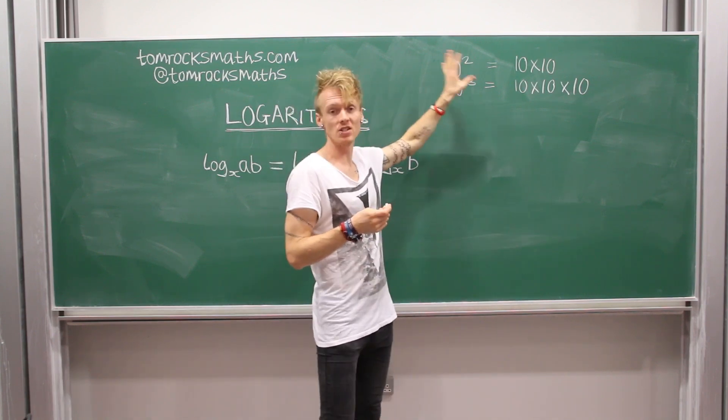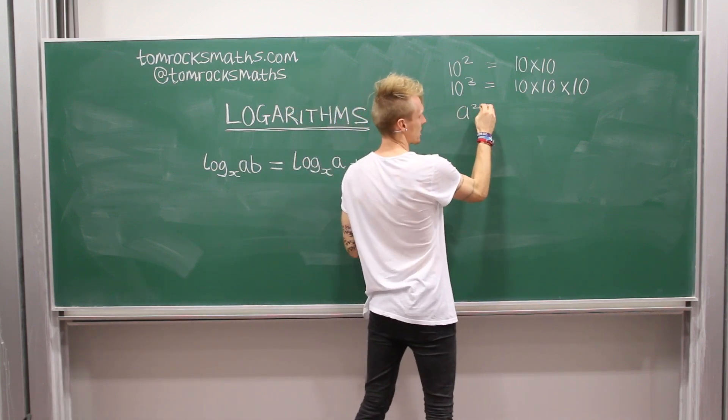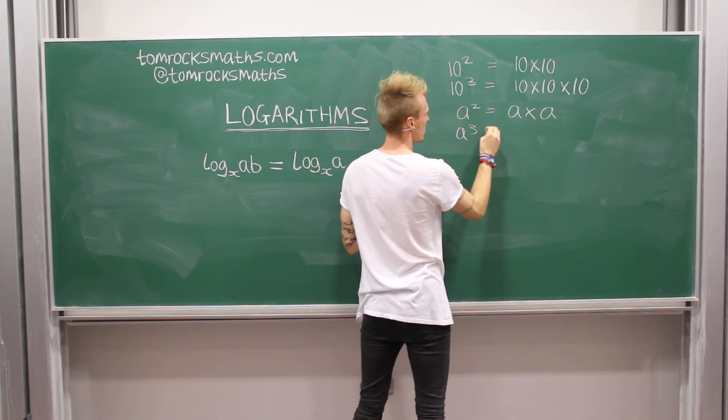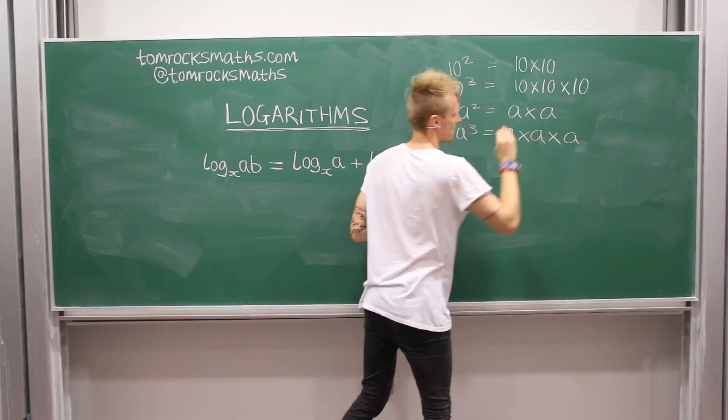this just extends to algebra. So instead of having a number such as 10 squared or 10 cubed, we could have a squared, which is just a times a, or we could have a cubed, which is just a times a times a.